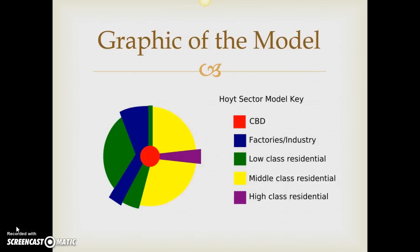This has been our quick review of the Sector Model, put together by a guy named Homer Hoyt. You need to recognize the name, you need to recognize that it's Hoyt's Model, the Sector Model. You need to recognize the graphic — when you look at it, you need to immediately think sector model. If you see a city model that's got pie slices, think sector model. This particular graphic is a general one and didn't include the education district that your textbook includes. If you want to see a picture of the graphic with the education and recreation district, look at page 310 in your book.